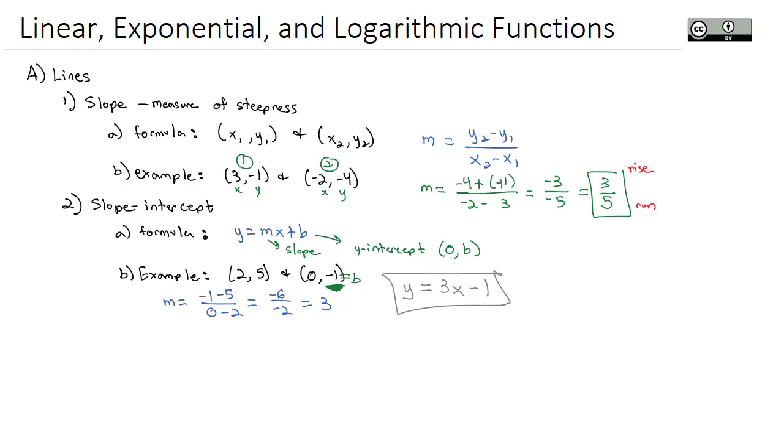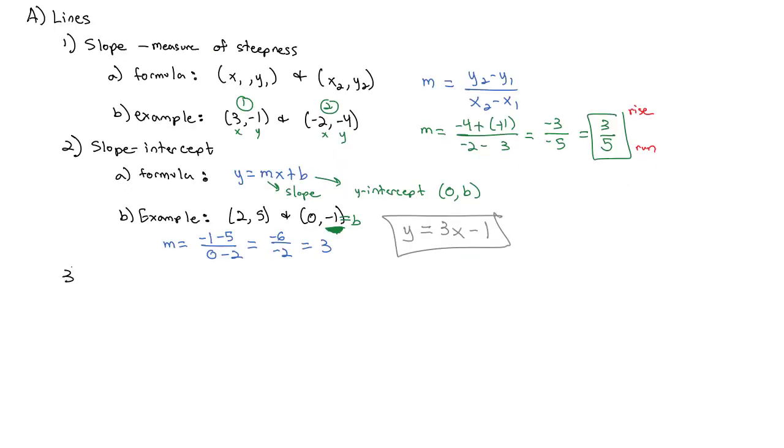But what if one of those points is not the y-intercept? What if one of those points doesn't have x equal to 0? In that case, we use what is called the point-slope equation. And this one's actually the one we will use the most in our calculus class. The formula for this point-slope equation is y equals m times (x minus x1) plus y1, where m is the slope, and (x1, y1) is a point on the graph.